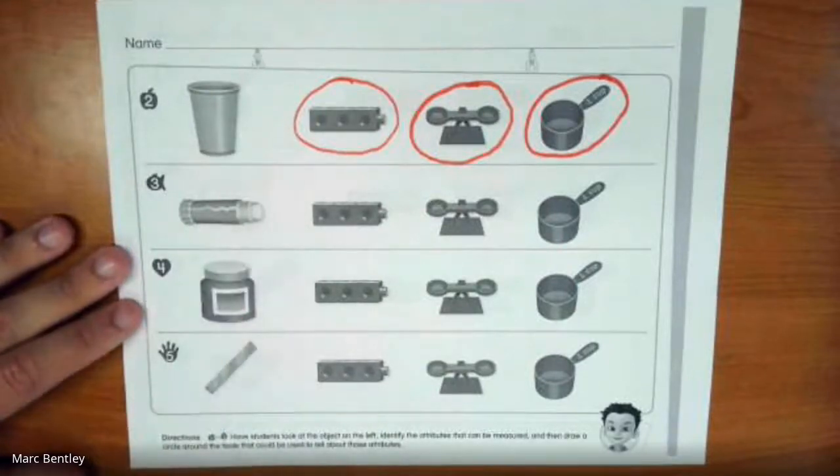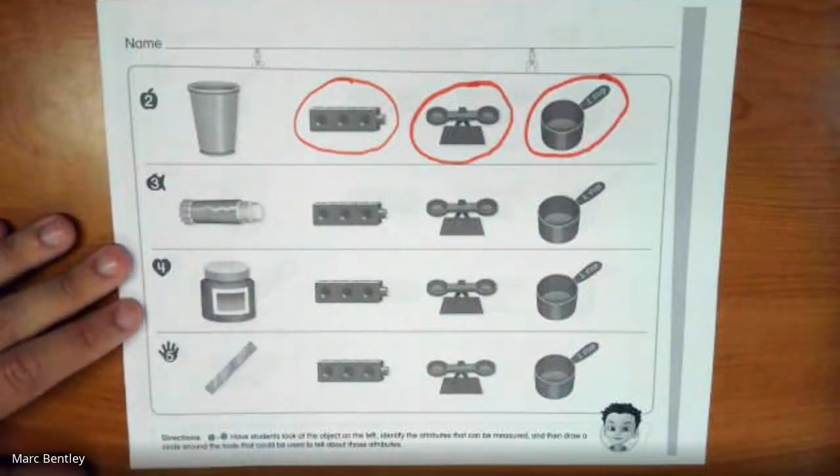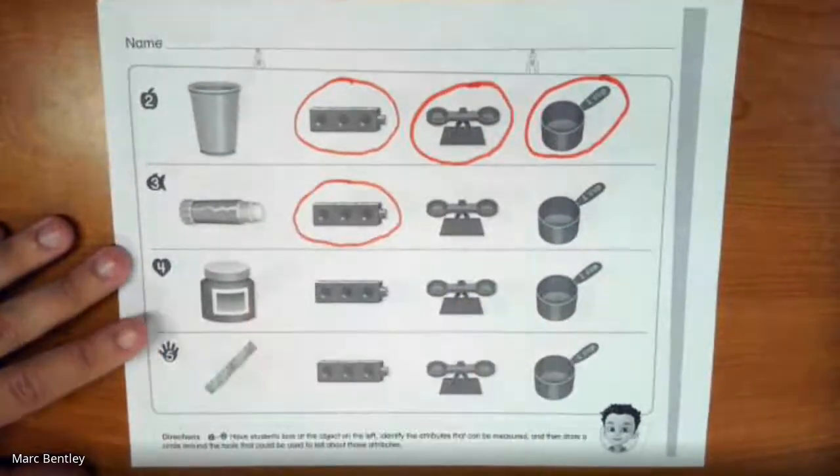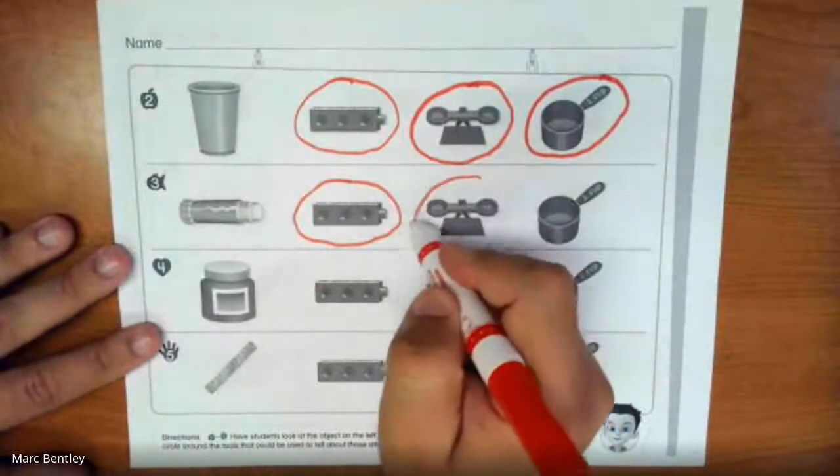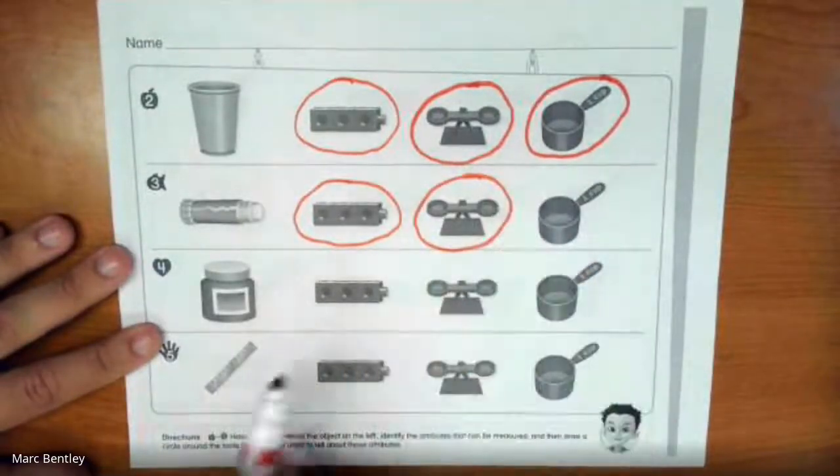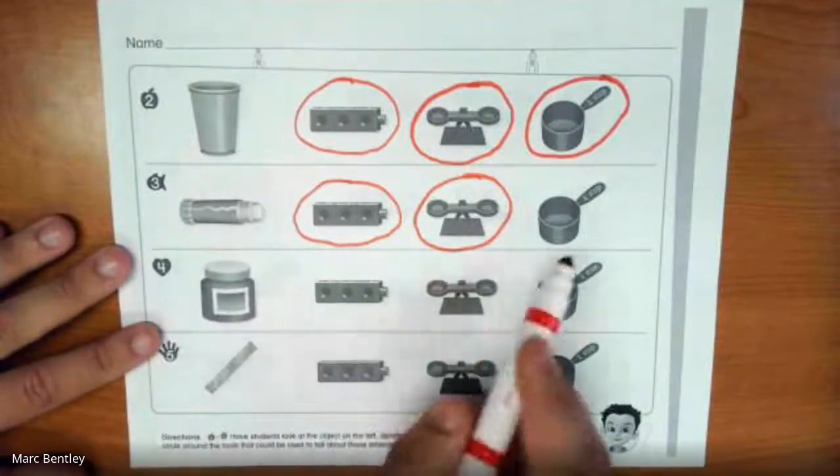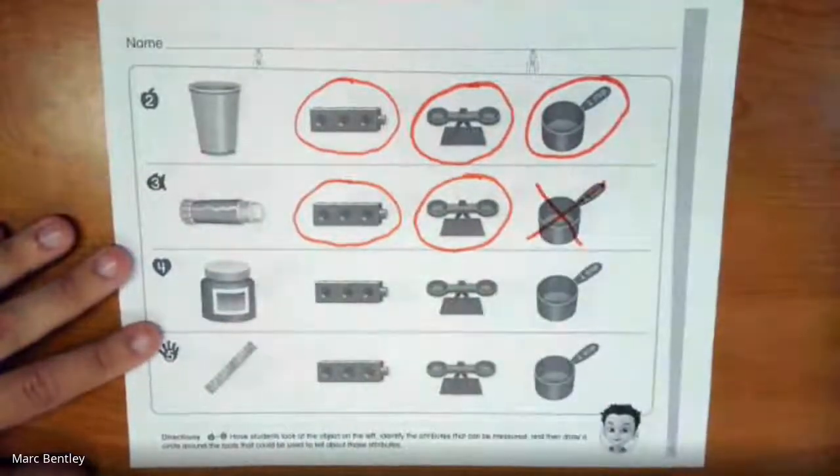Moving down, here could we measure this object's length? Yep, we could definitely measure the length. What about the weight? Yep, there's a glue stick, we could definitely measure the weight of the glue stick. But since it has glue in it already, it is not hollow, it's already filled, so we could not measure its capacity, so I'm going to put an X through that.